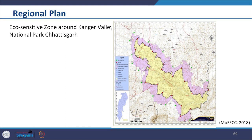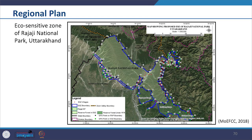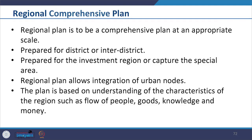We also see examples of regional plans prepared for investment regions. The image taken from the website of National Industrial Corridor Development Corporation Limited shows various industrial corridors identified for regional planning. We can also see various regional plans identified for eco-sensitive zones — the eco-sensitive zone around Kangar Valley National Park in Chhattisgarh State and the eco-sensitive zone of Rajaji National Park in Uttarakhand State. A regional plan is to be a comprehensive plan at an appropriate scale.